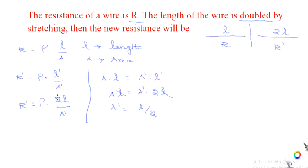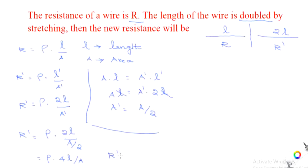Now we can substitute this value. R dash is equal to rho into 2L divided by A dash, which equals A by 2. The 2 in the denominator goes to the numerator, giving rho into 4L divided by A, or R dash equals 4 into rho·L divided by A. Since rho·L divided by A is already known as R, the new resistance R dash is equal to 4 times R.